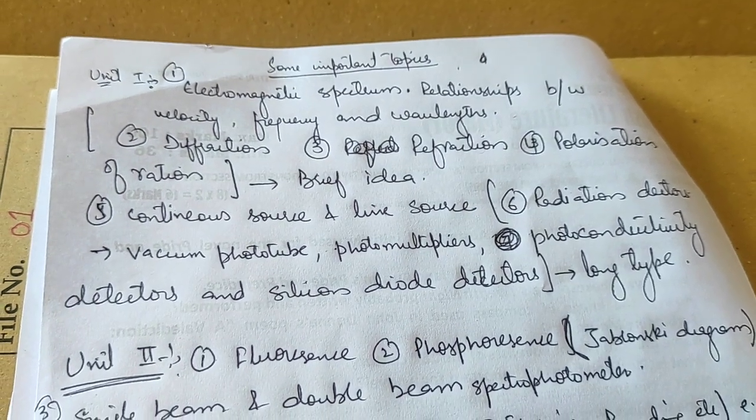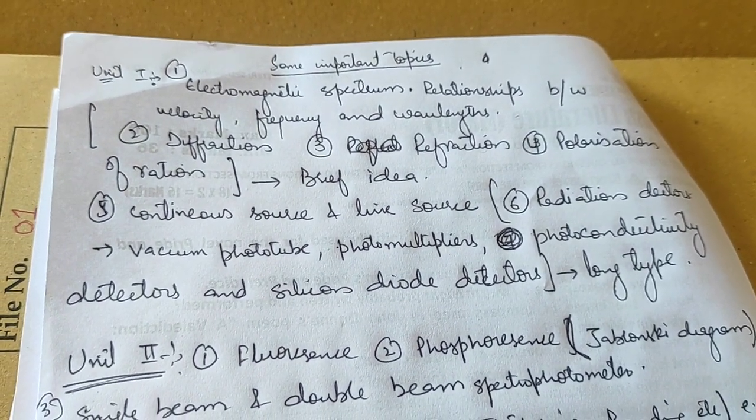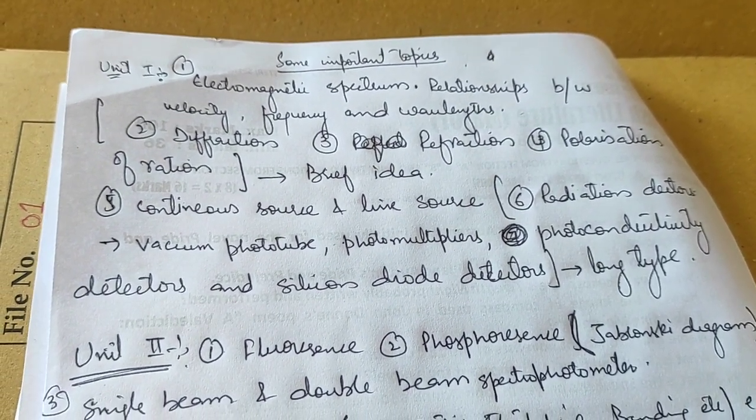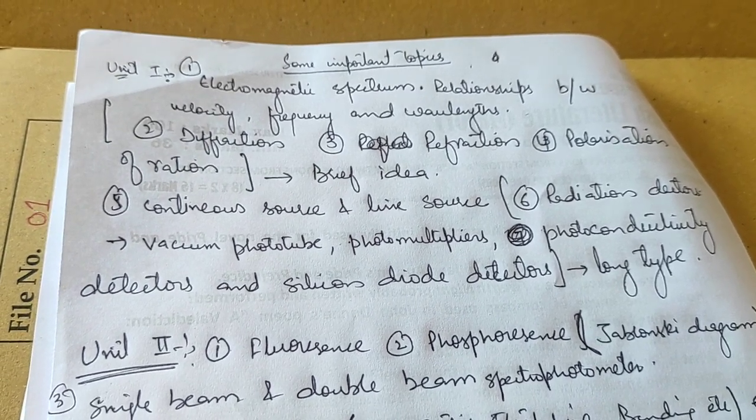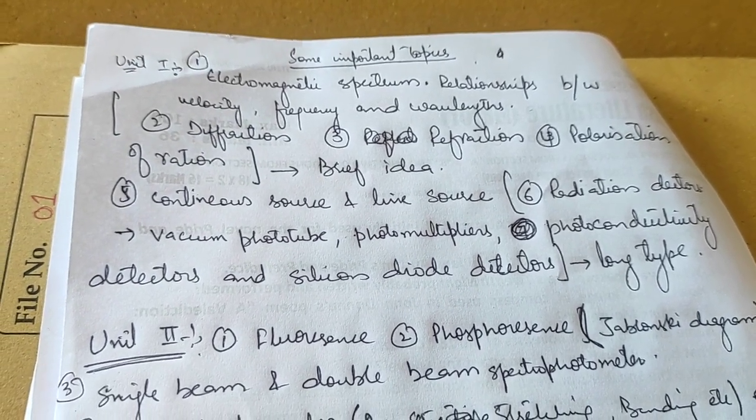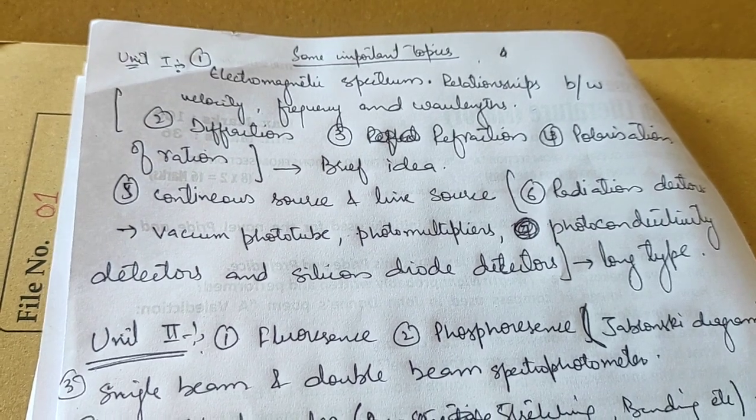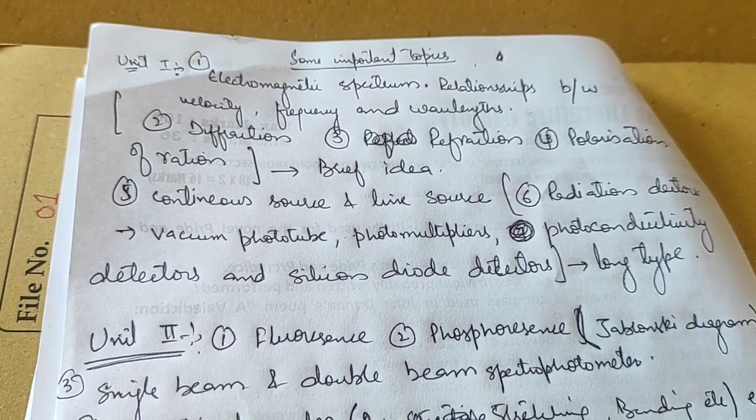From chapter first, go through the electromagnetic spectrum—the full range of the electromagnetic spectrum and the relationship between wavelength, frequency, and polarization. Prepare some basic wave phenomena like refraction and polarization for short-type questions.